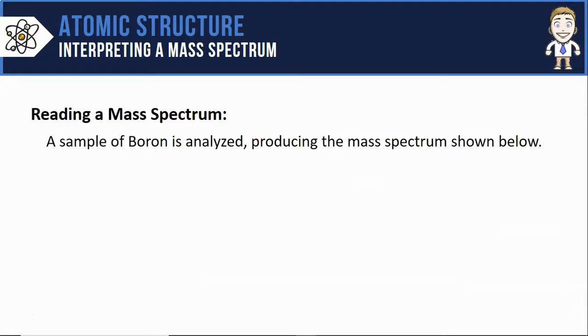So let's say I took a sample of boron atoms and had them analyzed by a mass spectrometer producing the mass spectrum shown below.